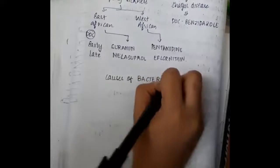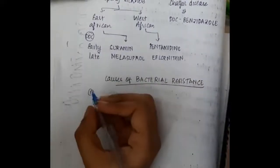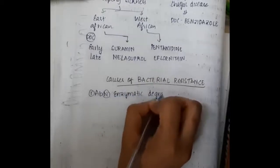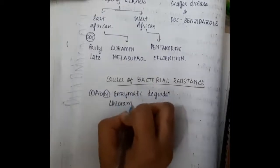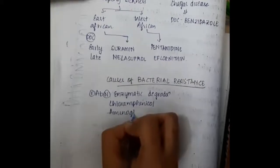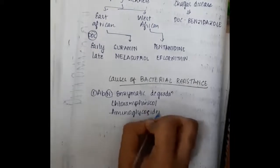Hello friends. Let us now learn some important points about the causes of bacterial resistance. First, it causes abnormal enzymatic degradation. By causing abnormal enzymatic degradation, bacteria will degrade the drugs with the help of enzymes. These include chloramphenicol, aminoglycosides, and also beta-lactams.